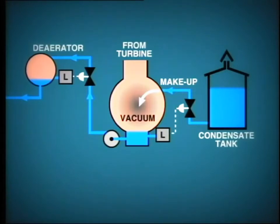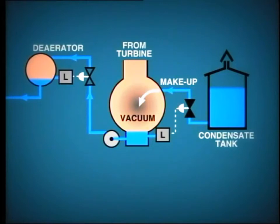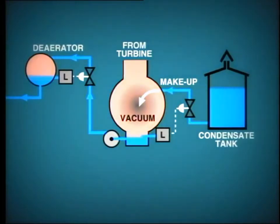This in turn causes the deaerator control valve to open up and so draw more water from the hot well. As the level in the hot well falls, more water is drawn from the condensate tank.